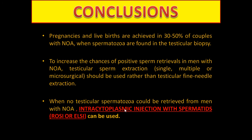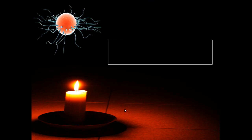When no testicular spermatozoa can be retrieved from men with non-obstructive azoospermia, intracytoplasmic injection with spermatids — round spermatid injection (ROSI) or elongated spermatid injection (ELSI) — can be used. Thank you.